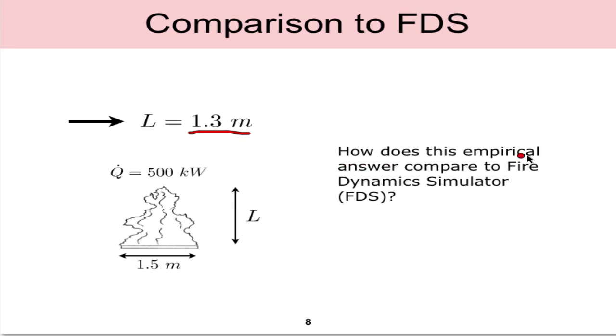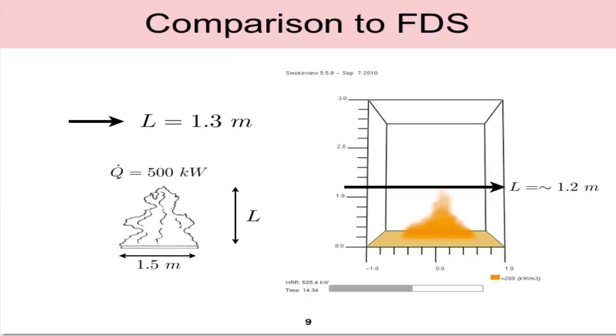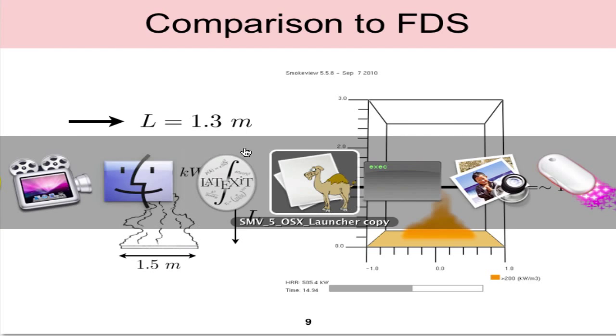From that now that we have that solution, we can then ask how does this empirical answer compare to say a simulation from Fire Dynamic Simulator or FDS. Is FDS able to predict the correct flame height and how do those answers compare to our empirical answer? With that I created an FDS simulation which I'll show here.